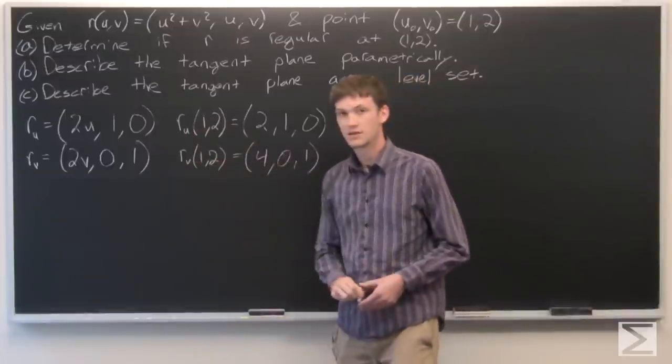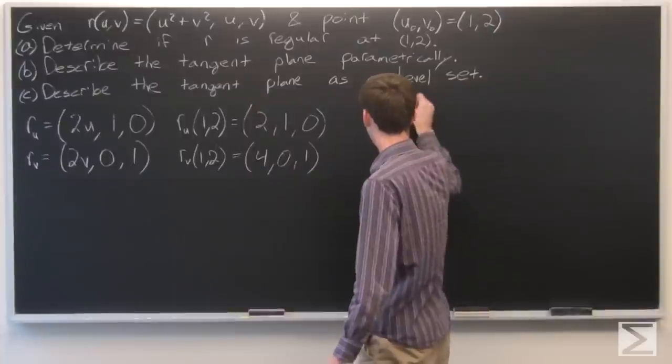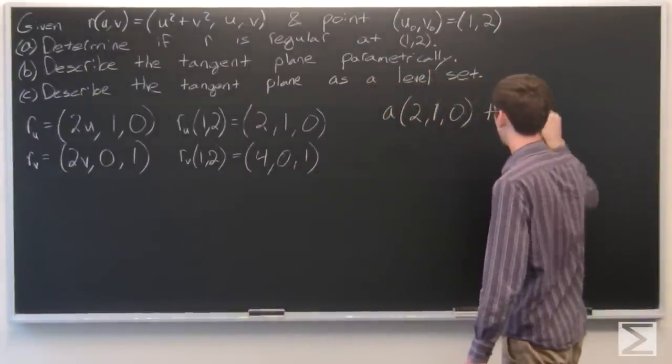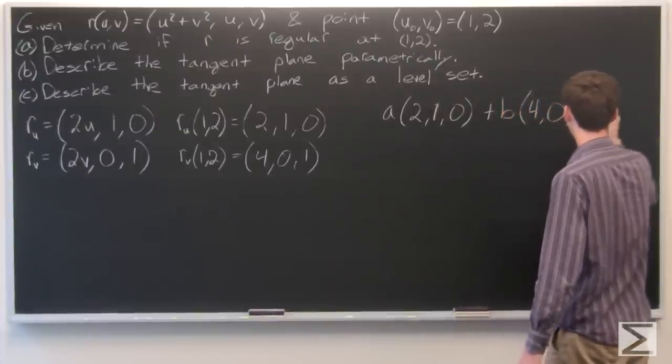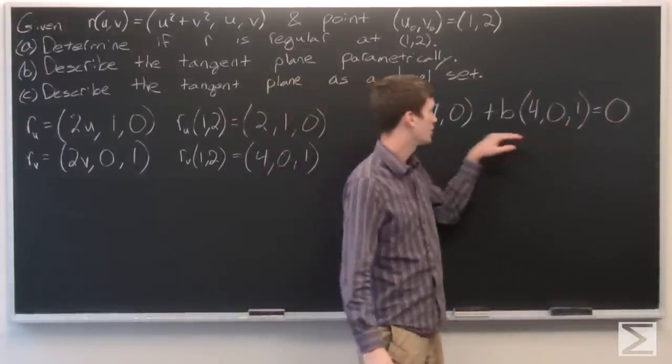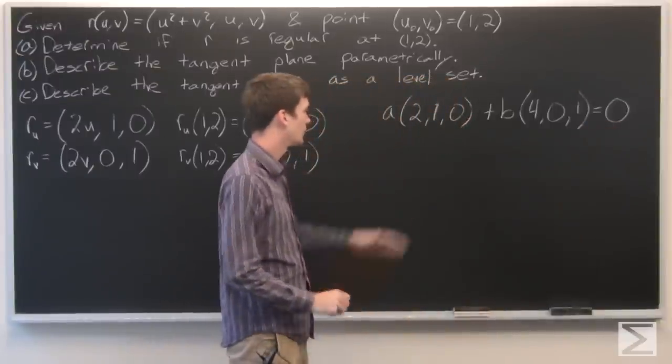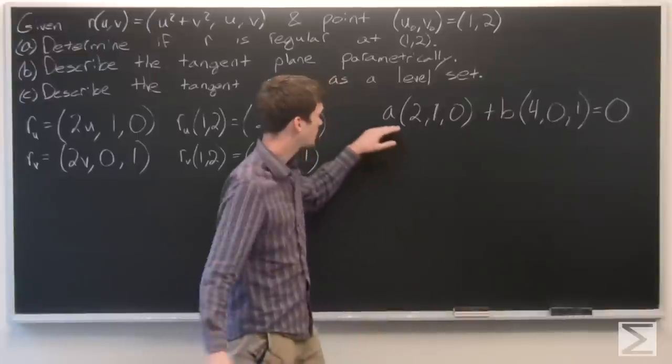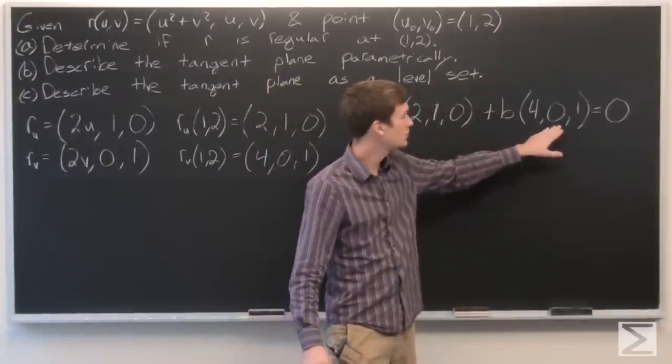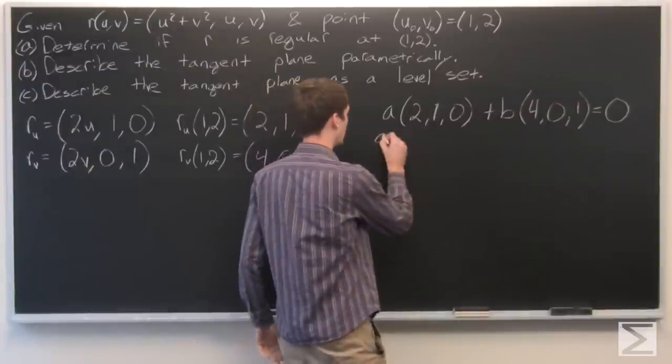We want to determine if these two are a linear combination of each other. So let's say a times 2, 1, 0 plus b times 4, 0, 1. And we want to see if there are a and b that are not both equal to 0, such that we get the 0 vector. So if we look at this, we see that the second component is 0 in this term and 1 in this term. So in order for the second component to be 0, we get that a equals 0.